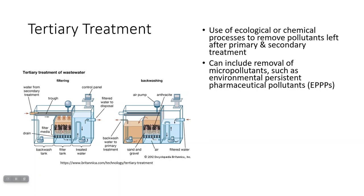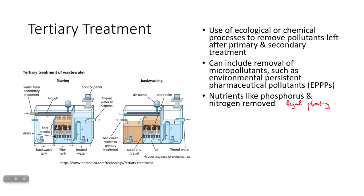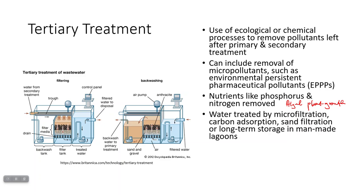You can also remove nutrients like phosphorus and nitrogen, because these are particularly going to help cause algal blooms or fuel plant growth. If you leave them in the water in certain ecosystems, that can lead to an overgrowth of algae or plants. You can treat the water through microfiltration, carbon adsorption, filtering through sand, or storing it long-term in man-made lagoons to help get rid of some of the nutrients if you have algae there.